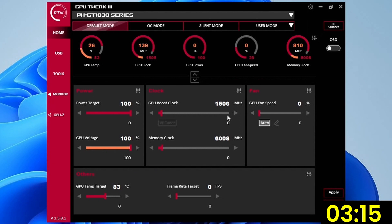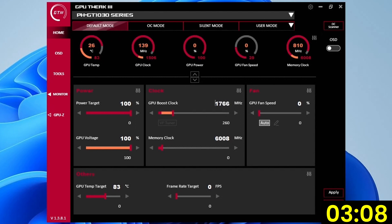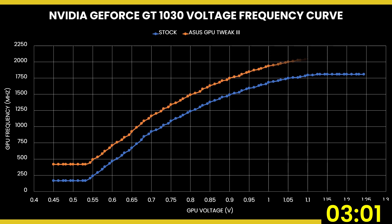Set GPU Boost Clock to 1766 plus 260. This offsets the entire GPU voltage-frequency curve by 260 MHz over the standard curve, so for a given voltage, the frequency will be 260 MHz higher. The GPU Boost 3.0 algorithm still uses the voltage-frequency curve to dynamically adjust GPU performance according to the available voltage headroom.